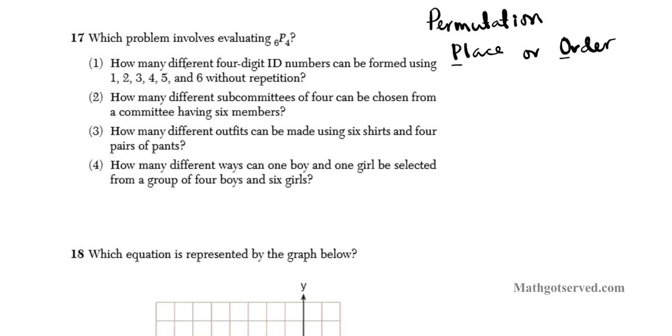Any of these that involves placing elements of a bigger set into certain positions qualify as permutation. So let's take a look at option 1. It says how many different 4 digit ID numbers can be formed using 1, 2, 3, 4, 5, 6. Since you are different, what does that mean? It means that you are ordering them in different ways. You have out of 6 numbers, you are creating codes, different codes. So option 1 is a perfect example of permutation. For out of 6 digits, you are placing 4 at a time. So option 1 is the answer.